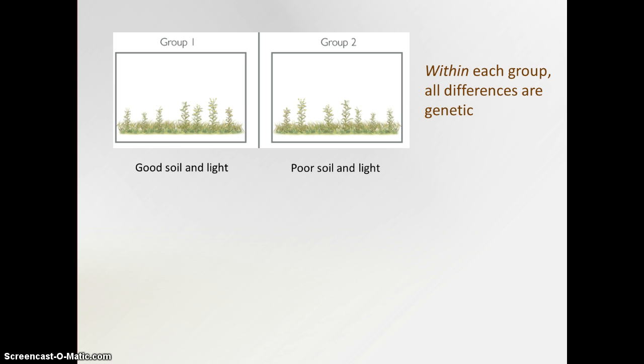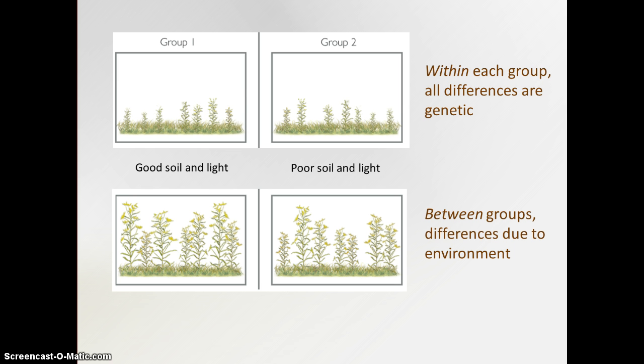We're going to expect that the group that gets good soil and light is going to wind up being sort of better developed. And that's exactly what we see here. So in this group on the left, there is variation in height, just like there's variation in the group on the right. But we can see that group one, on average, is considerably taller than group two. So the differences between group one and group two are now due entirely to the environment, even though that heritability might be 100% or really close to it.